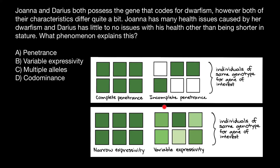Incomplete penetrance would be an example when some people would have a defective allele or gene but would be phenotypically normal, and some of them would express this genetic disorder. This is an example of complete penetrance versus incomplete penetrance of a genetic disorder.